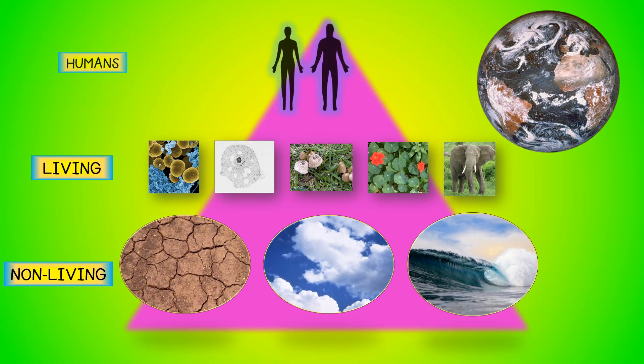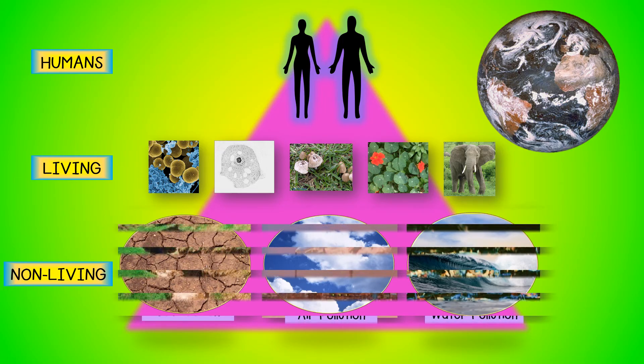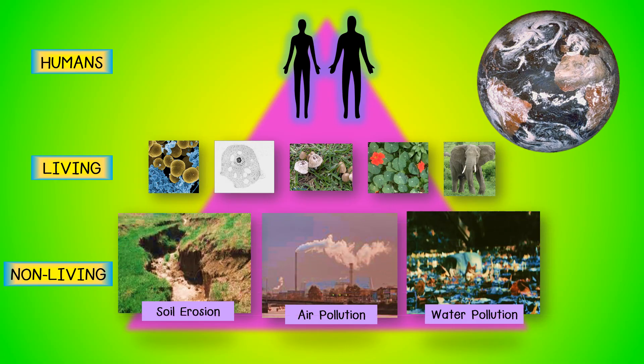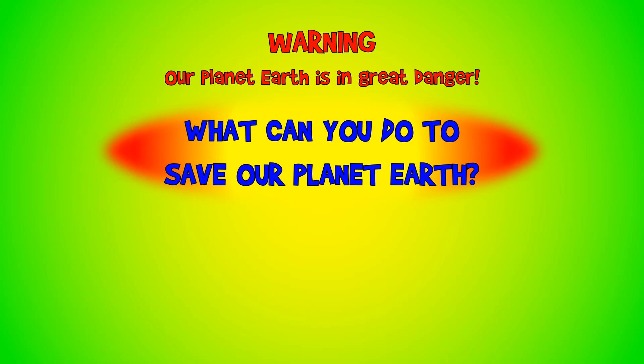Planet Earth is a huge system where the non-living parts support the living parts. The lithosphere is being destroyed by soil erosion, the atmosphere by air pollution, and the hydrosphere by water pollution. When the non-living parts of the system are destroyed, the living things will be destroyed too. Eventually, humans will have neither oxygen to breathe nor food for energy, and the entire system will collapse.